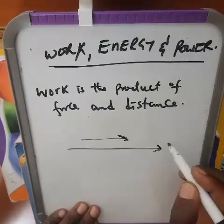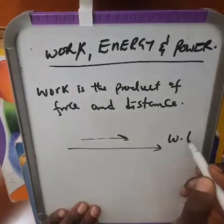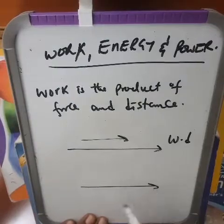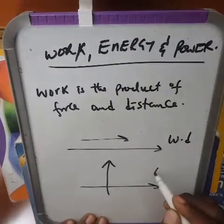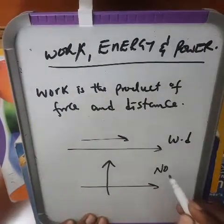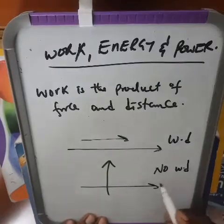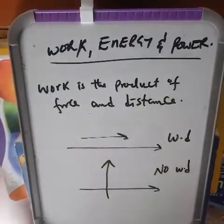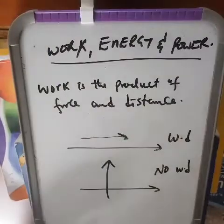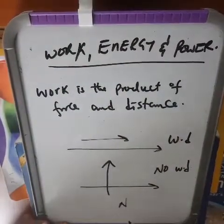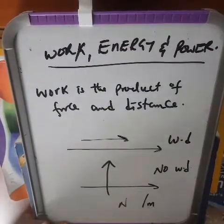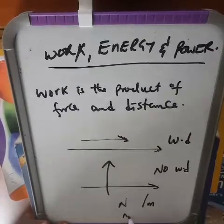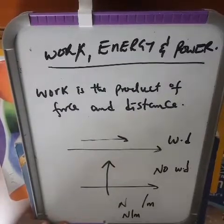That's where we can say work is done. But if the distance is going in a different direction from the force, then there is no work done — that's what we call a moment. So work is a product of force and distance. Force is measured in newtons and distance is measured in meters, therefore the units for work are newton-meters.